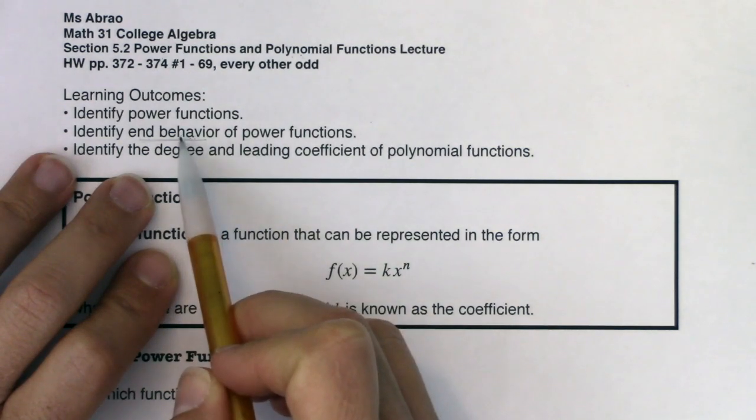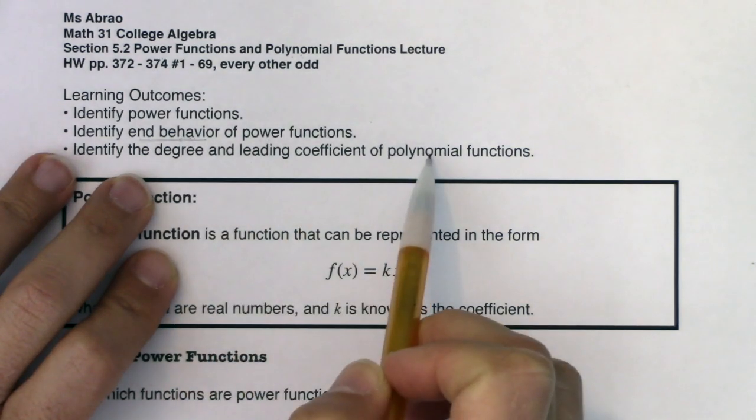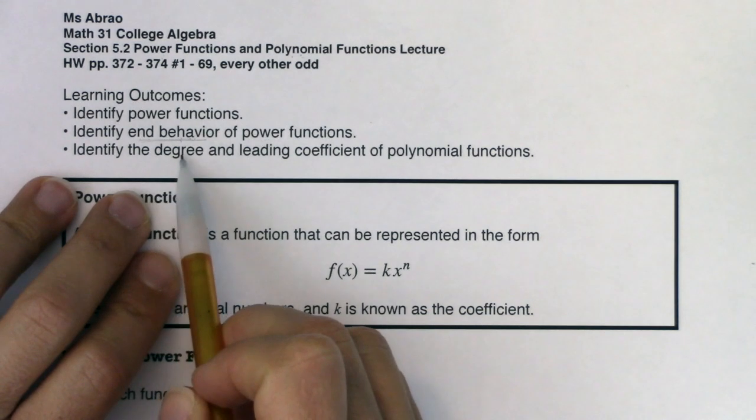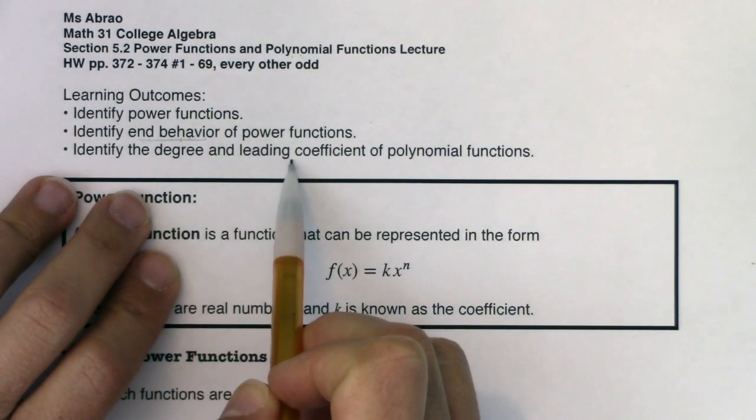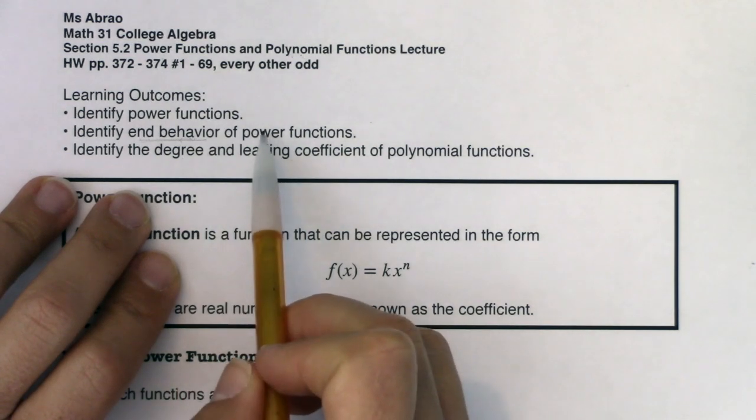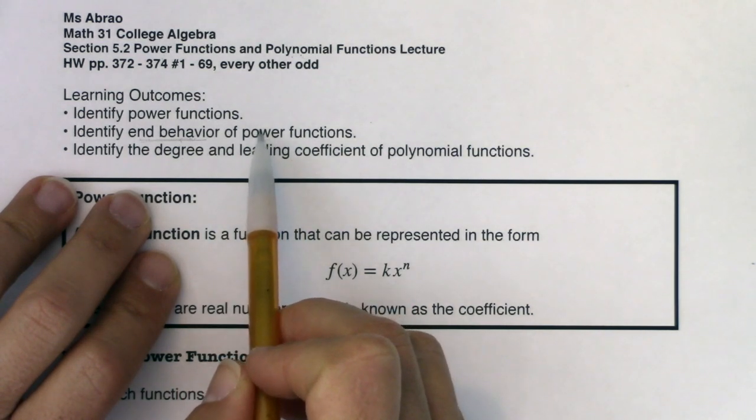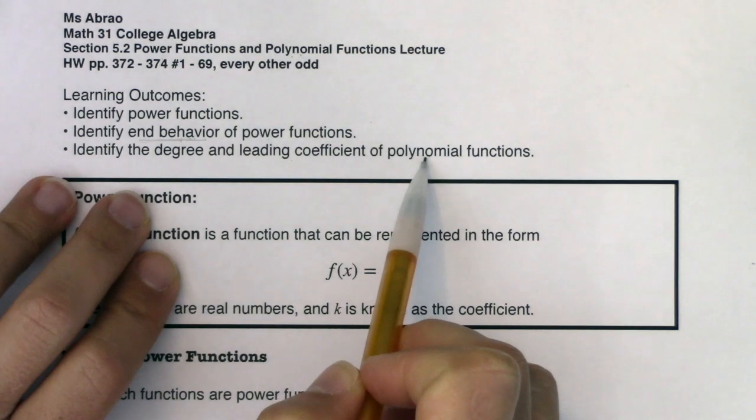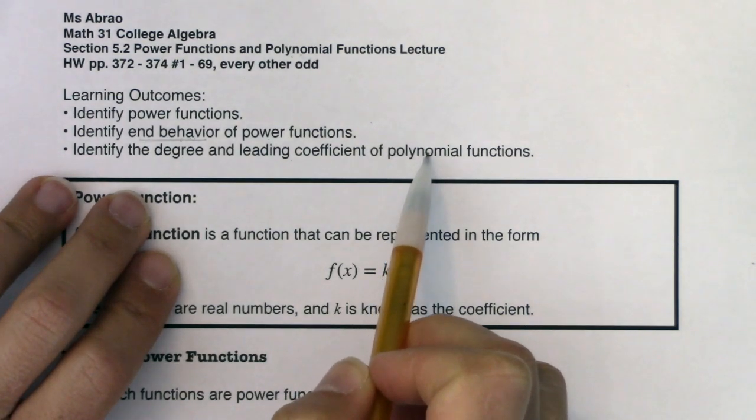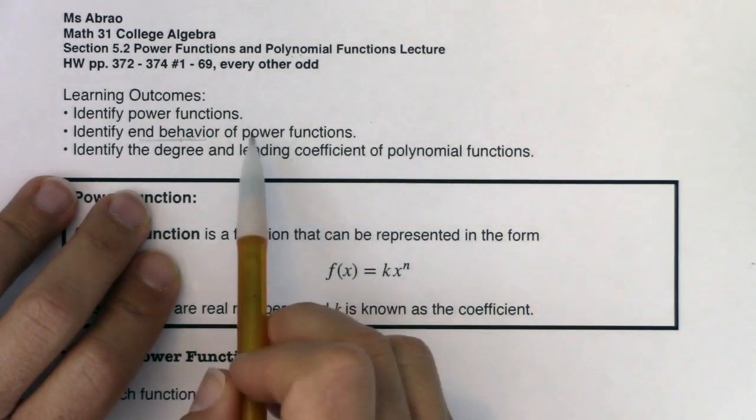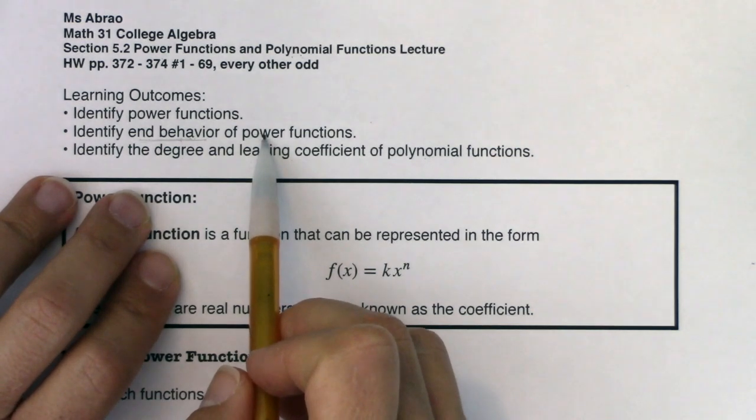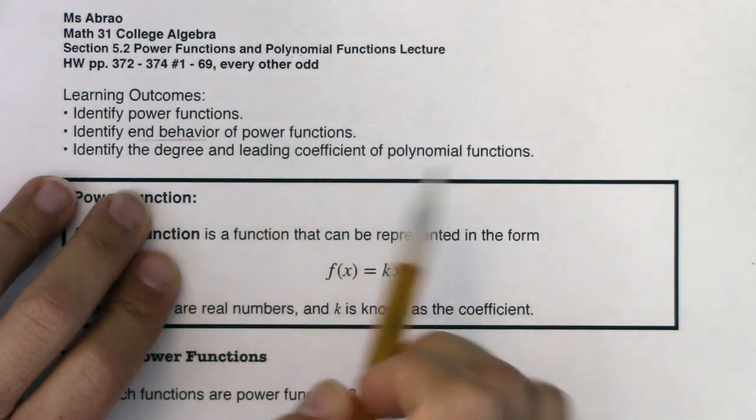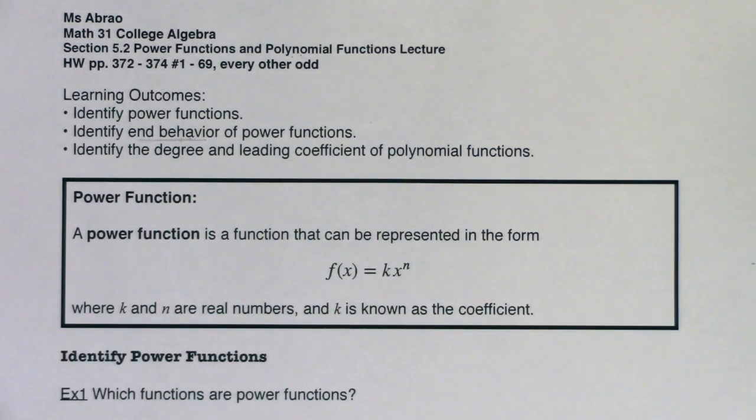We're going to extend that end behavior idea to polynomial functions and talk about the degree of the polynomial and the leading coefficient of a polynomial. If we want to think about some vocab, every power function is automatically a polynomial. It's just that polynomials encompass so much more than just the power functions. I'll explain the difference once we pick up their definitions.